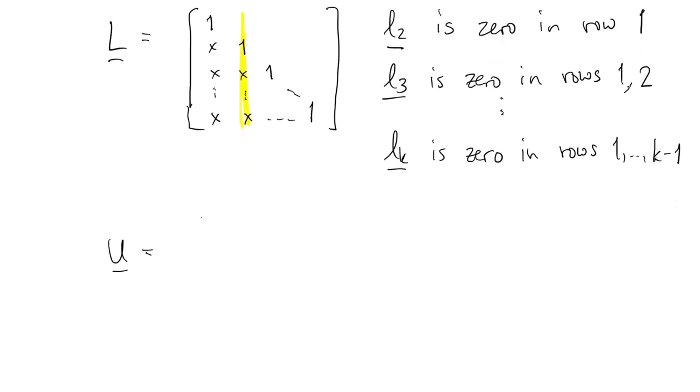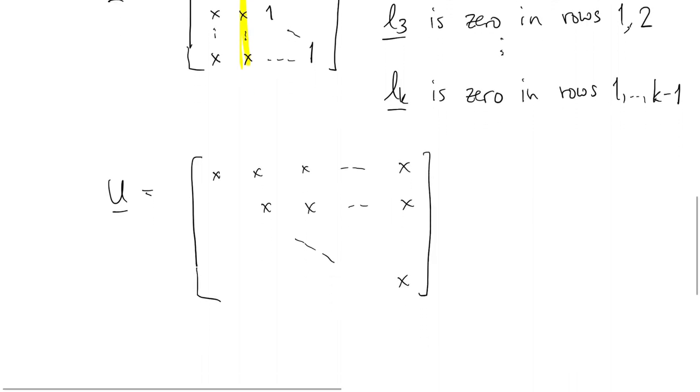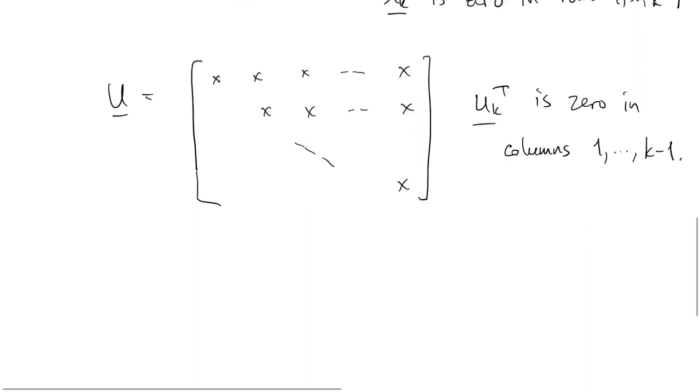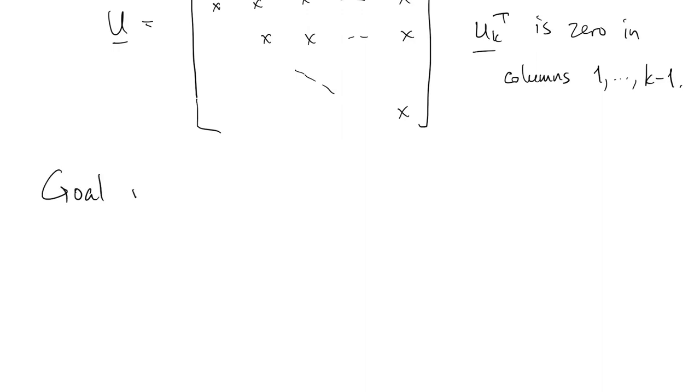Now U is upper triangular, and we don't say anything special about the diagonal. But if we look at the row vectors, well, the kth row is zero in the first k minus one columns. Those zero structures turn out to be critical to deriving the algorithm.